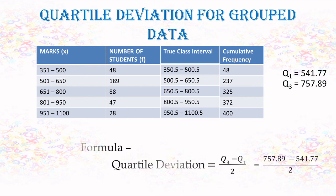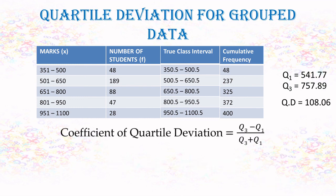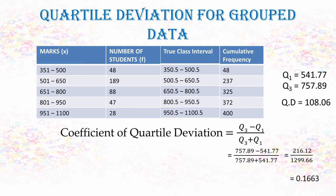Once Q1 and Q3 are found, substitute into the formula: quartile deviation equals Q3 minus Q1 divided by 2. Substituting gives 108.06 as the quartile deviation for this data. We can also calculate the coefficient of quartile deviation using Q3 minus Q1 divided by Q3 plus Q1 to compare two different datasets. That's how we calculate quartile deviation and the coefficient of quartile deviation. Thanks for watching.